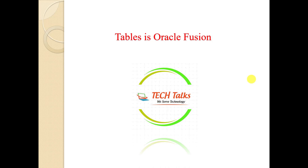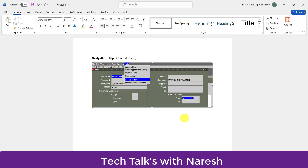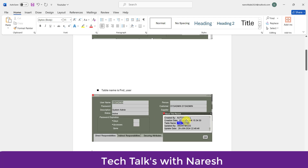I will go to a document I have prepared to explain all this. You can see on my screen a screenshot from the R12 instance. Suppose you open a form in R12 — I have opened the user dashboard form and queried the sysadmin user. To check from which table this information is coming, I go to Help and then click Record History. After clicking Record History, I get a pop-up, and here you can see that I am getting the table name, which is FND_USER. So it is quite easy to get those respective details in R12.